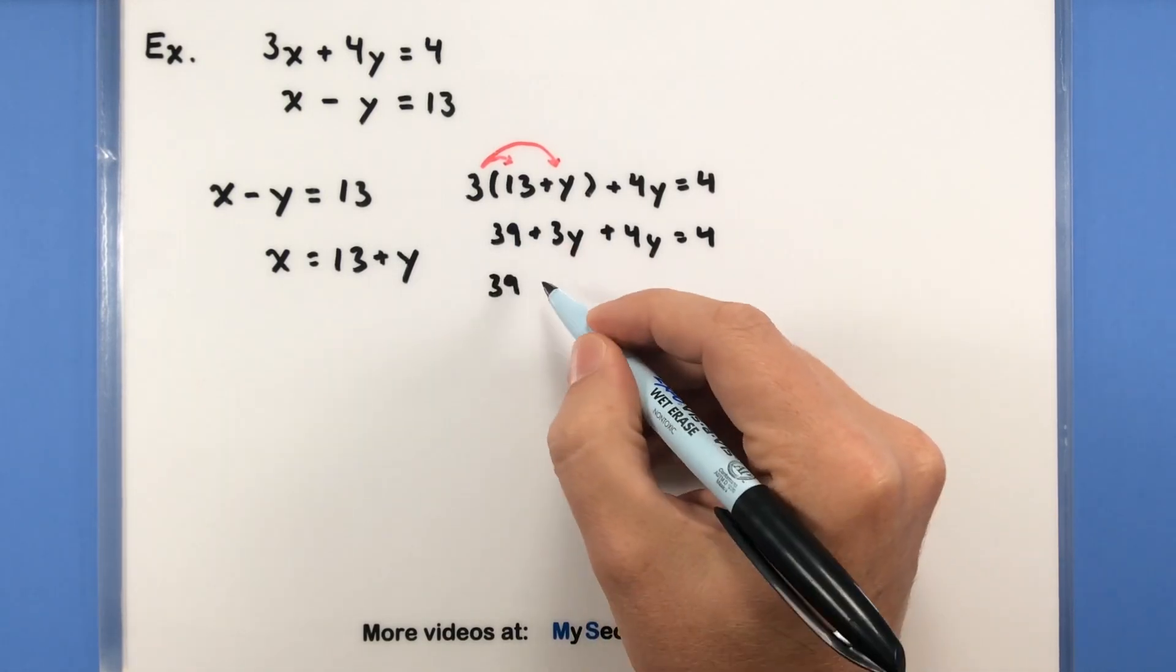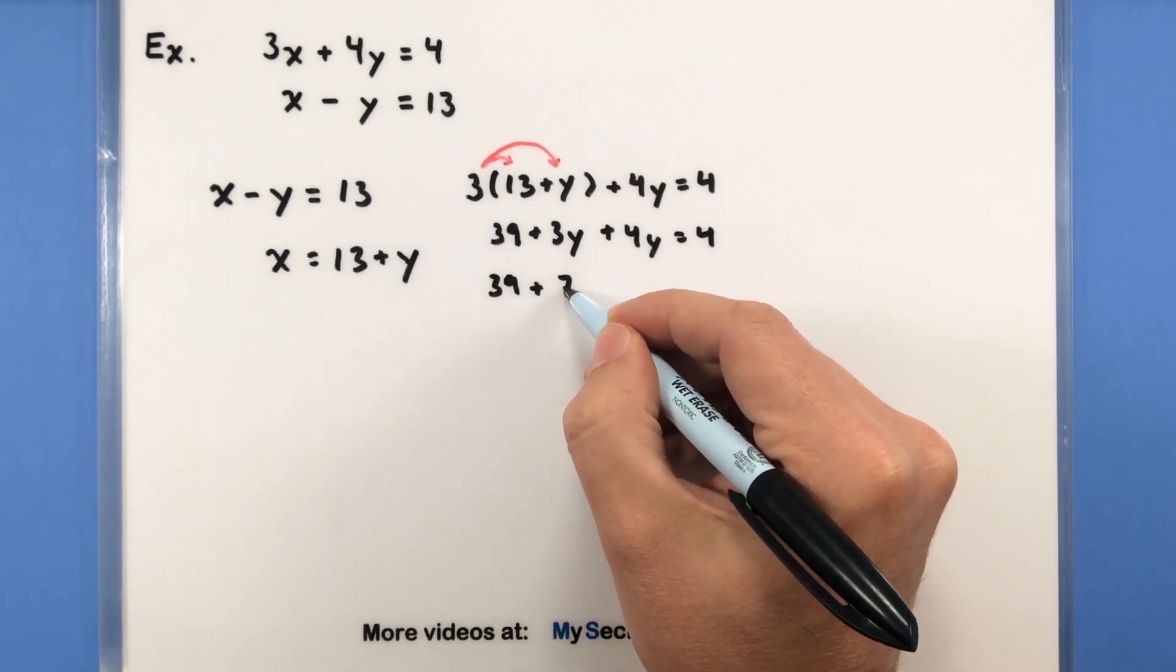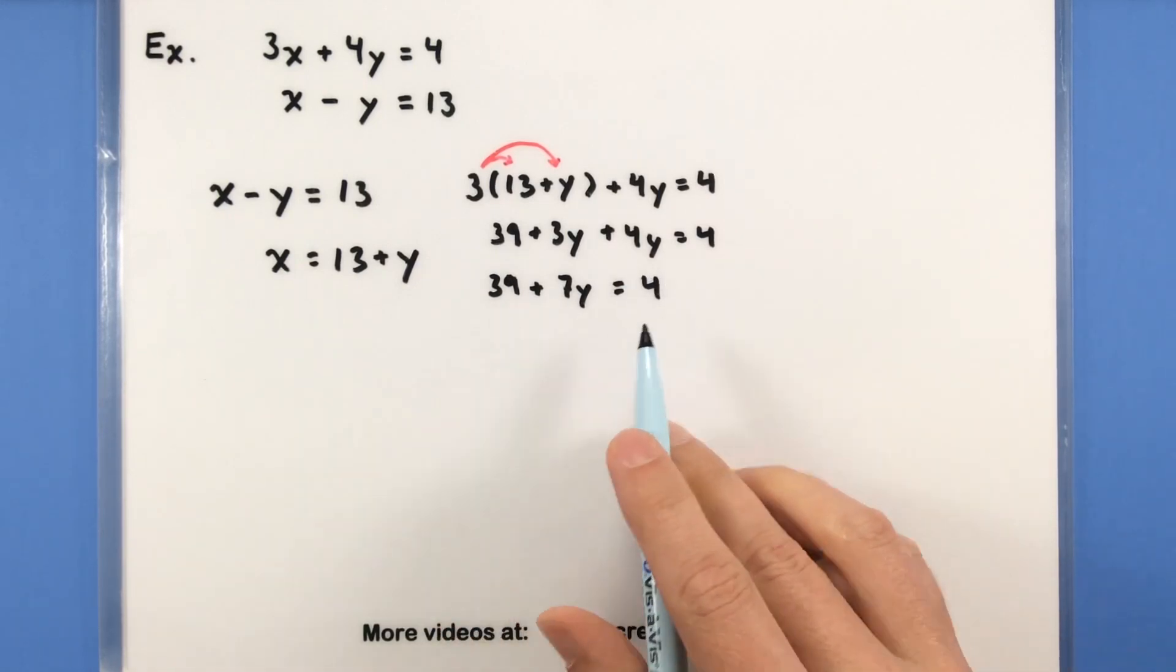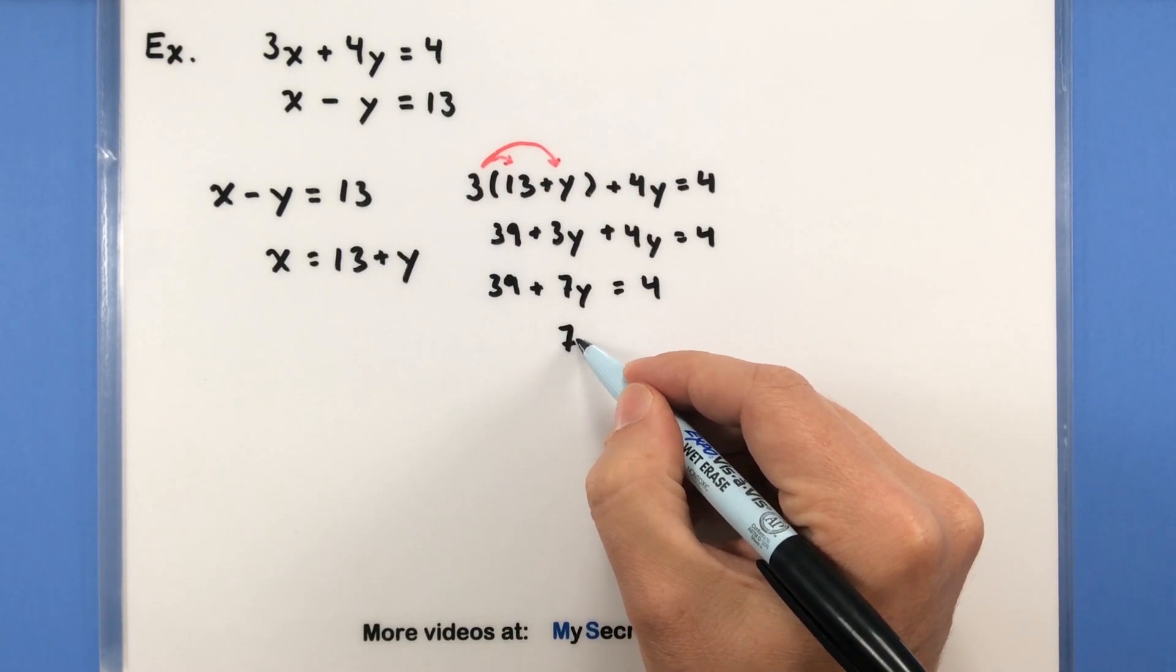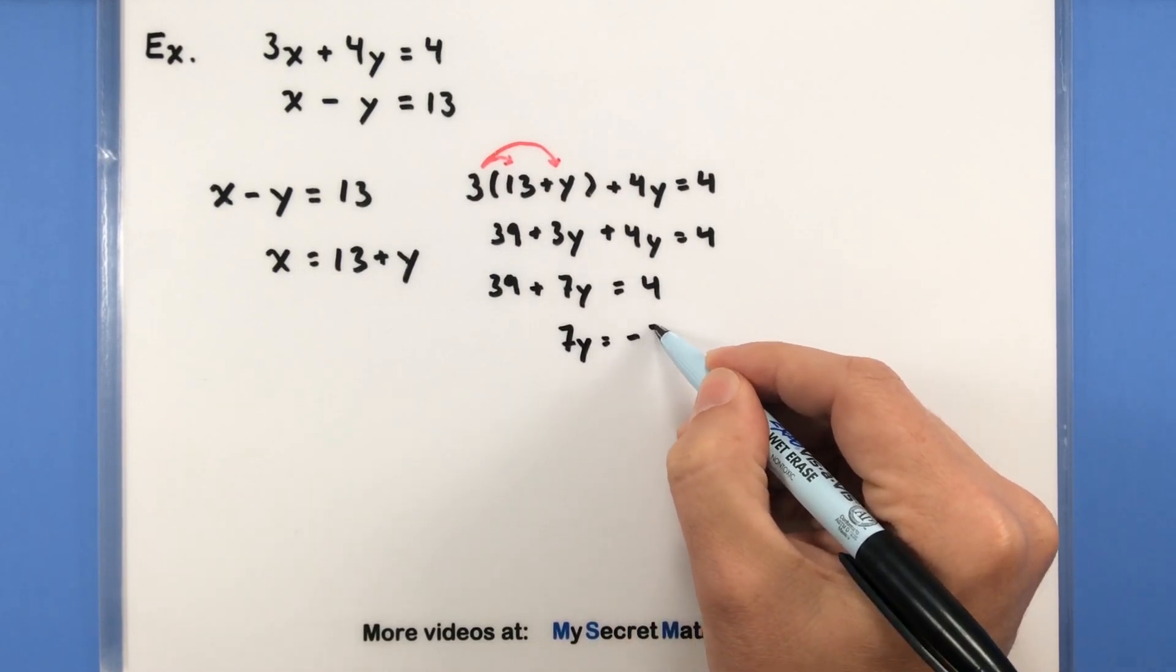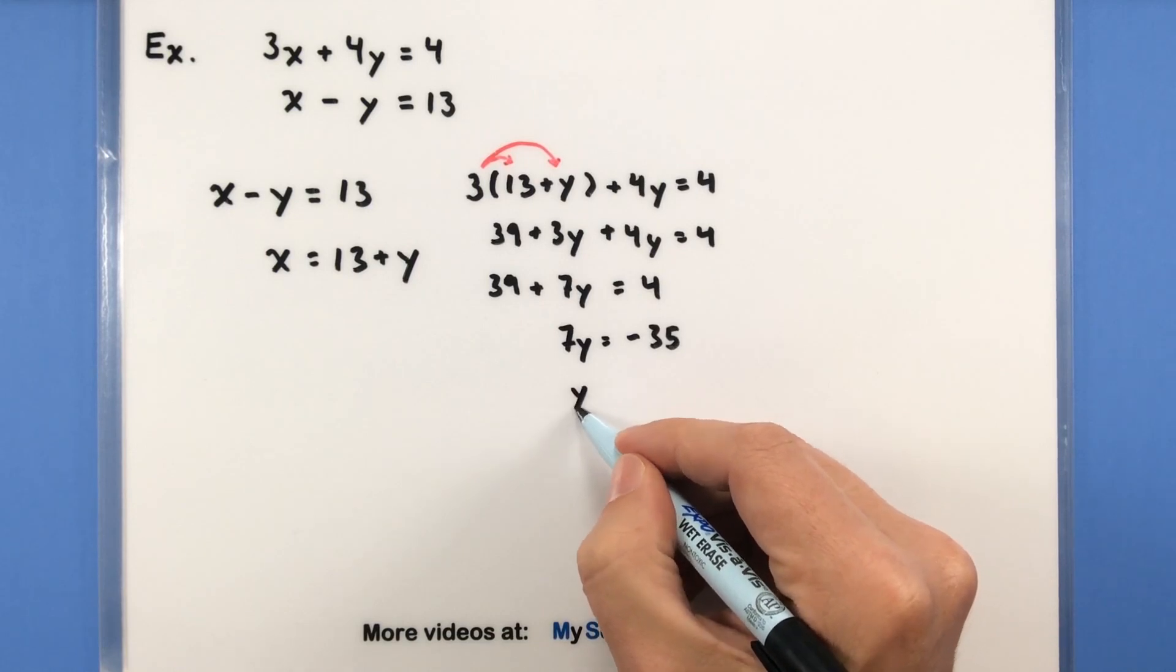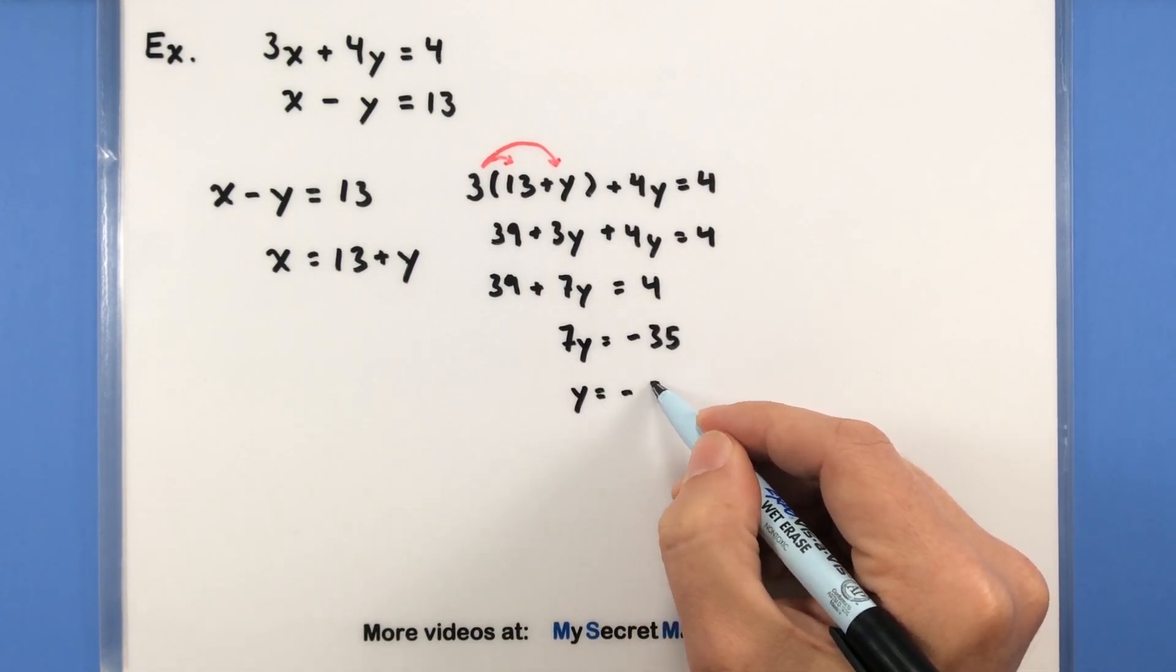Let's see, 39, a 3y plus 4y, that's a total of 7y equals 4. Subtracting the 39 from both sides, that'll give us a negative 35. And then dividing both sides by 7, we'll get a negative 5.